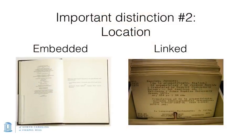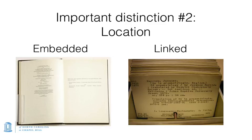Now, remember from unit one, in the video where I talked about important distinctions in description, I drew a distinction between embedded and what I called linked metadata records. Metadata can be embedded in your resource — for example, the copyright page in a book is a metadata record that's embedded within the book. Or you can have a connection between a metadata record, which is a separate object from the resource being described, like a catalog card in a library catalog. The catalog card is in a separate place — it is a separate object from the book, but it points back to the book that it's describing.